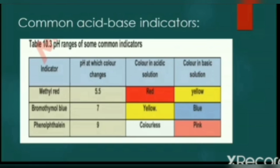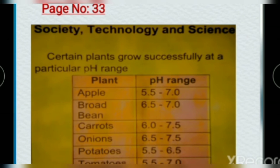Common acid-based indicators on page number 39 with pH ranges and color change. Page number 33 shows society, technology, and science. There are pH ranges given for some plants to grow in good conditions. Apple 5.5 to 7.0, broad beans 6.5 to 7.0, carrots 6.0 to 7.5, onions 6.5 to 7.5, potatoes 5.5 to 6.5, tomatoes 5.5 to 7.0.